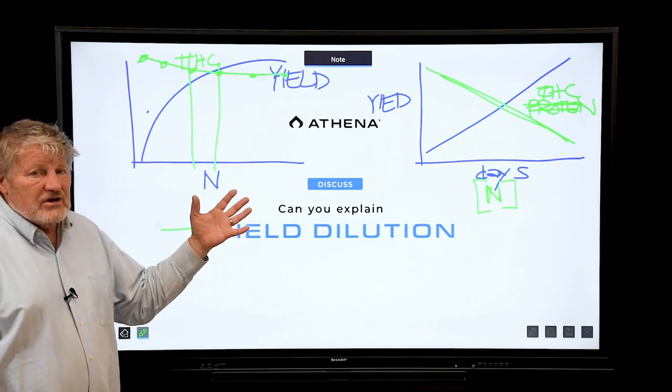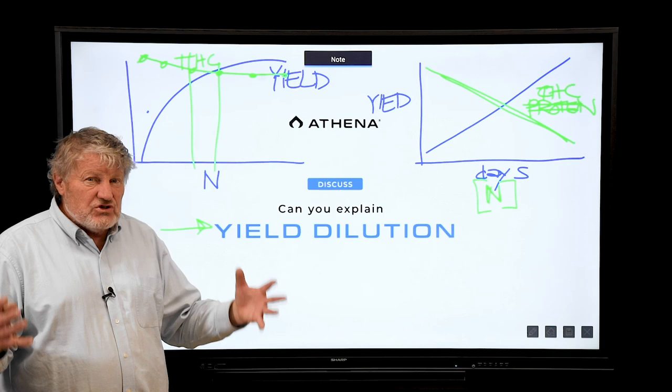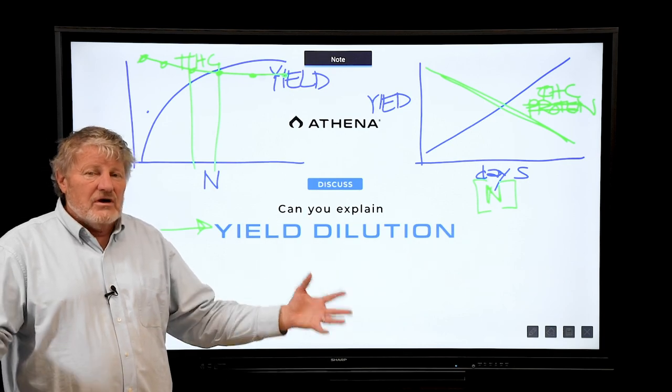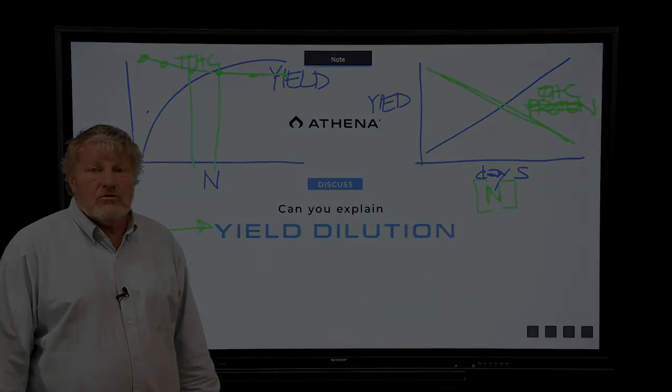This same thing can happen with terpenes too, more concentrated terpenes, not just cannabinoids. But this is an example once again of precision fertilization to optimize yield and quality.